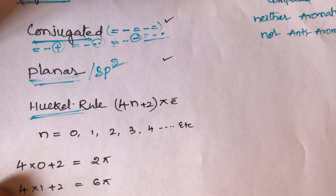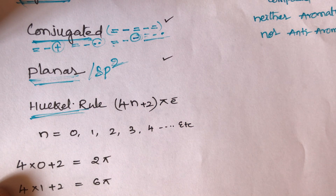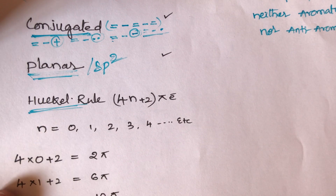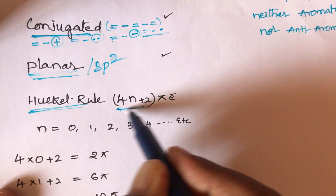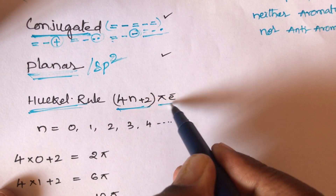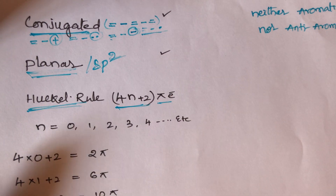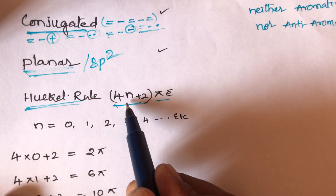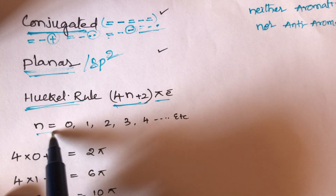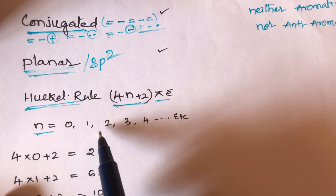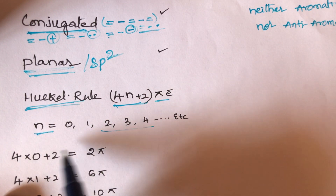What is Hückel's rule? That is 4n + 2 pi electrons. Here n can take values 0, 1, 2, 3, 4, and so on.